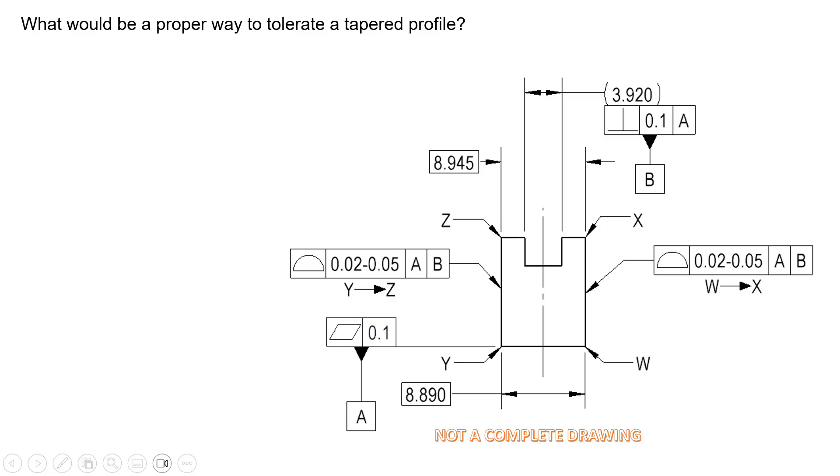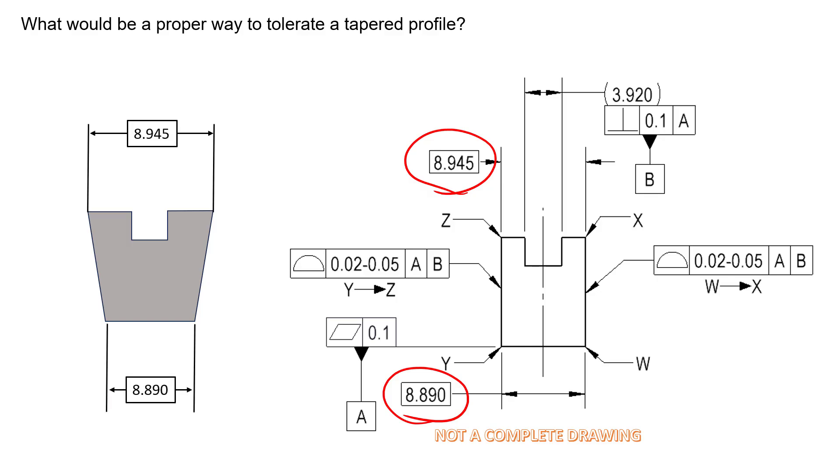We want taper on these surfaces but only allow so much taper. If that's the case, there's one thing we can do uniquely by giving more tolerance up here than down here. We have a nominally tapered feature because the bottom has a basic dimension of 8.89 and the top has 8.945—the bottom is smaller than the top. We might be interested in saying the top can have more deviation than the bottom. Something very unique we can use is the from-to symbol—the simple arrow between point W and point X.